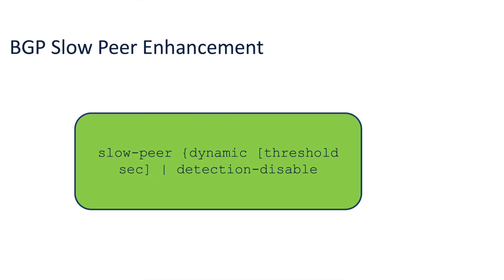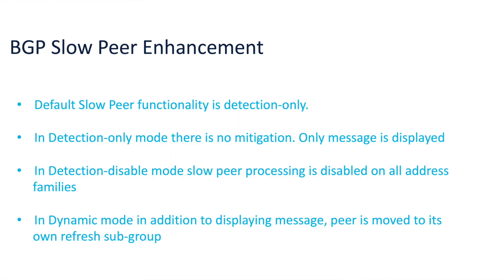Starting from 7.9.1, we have made enhancements to this implementation. Customers can now configure slow peer configuration in the global mode. When global slow peer configuration is not enabled, the default slow peer functionality is detection only, meaning all BGP neighbor address families are operating in detection-only mode. In detection-only mode of operation, when a neighbor address family is detected as slow or recovers from being slow, a message is displayed, but there will not be any mitigation to handle slow peers.